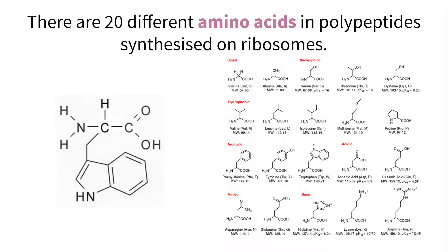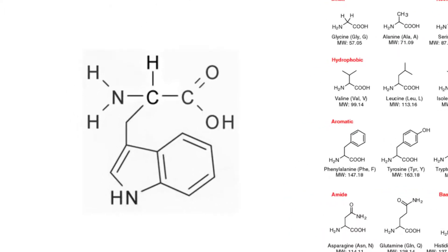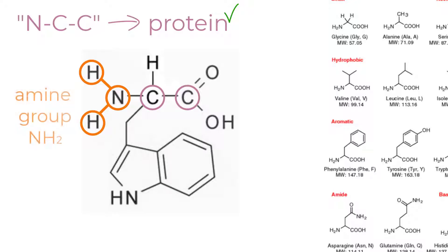All amino acids have common structural components and revolve around a central set of three atoms which are nitrogen, carbon, and another carbon. I often refer to this as NCC and it is a great indicator to look for to help you distinguish proteins from the other three macromolecules. Branching from the nitrogen are two bonds that hold two hydrogen atoms and we call this an amine group that is written as NH2.